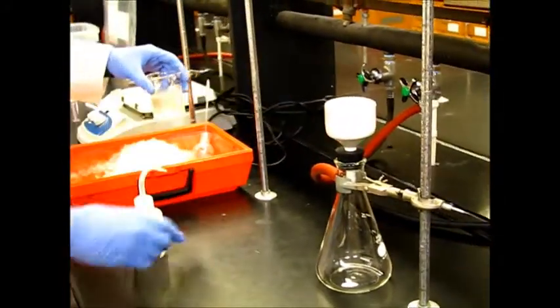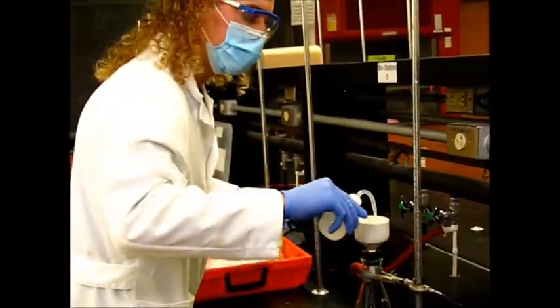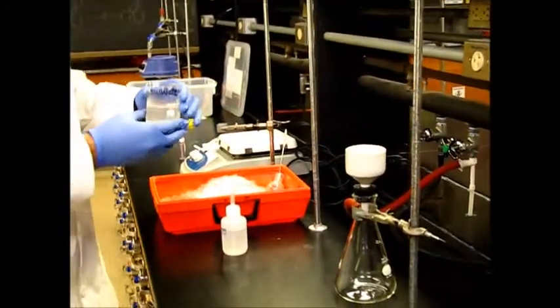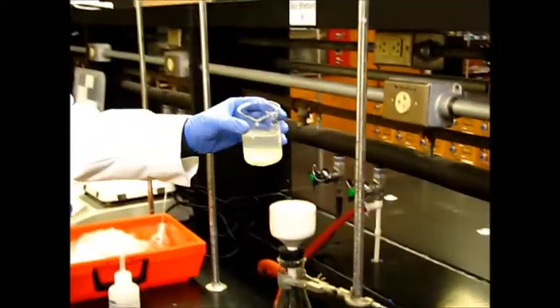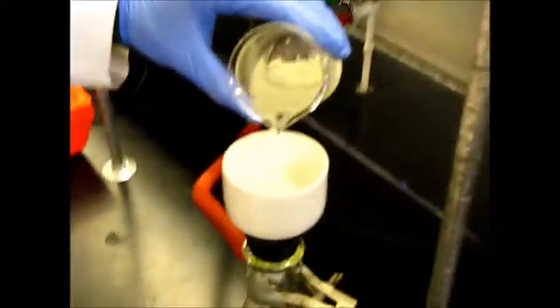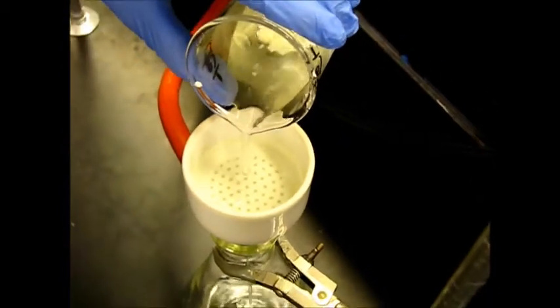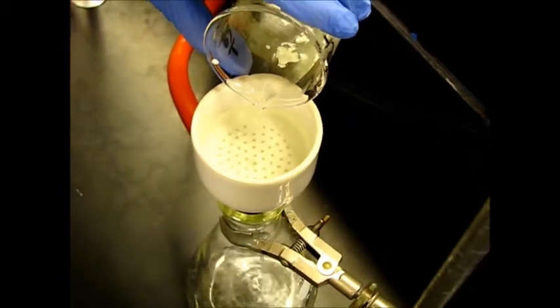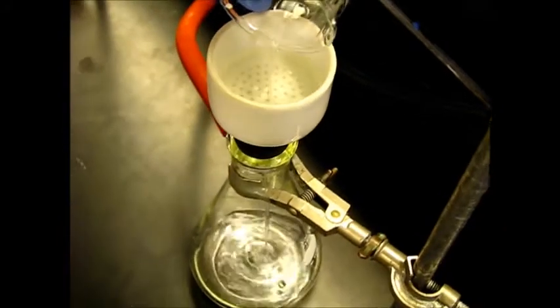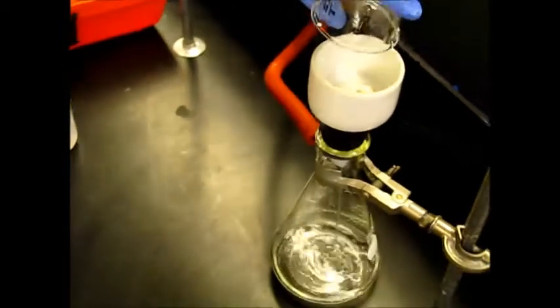Before you start your filtration, you want to make sure that your filter paper is wet so that you don't get any solid underneath it. Then we're going to add this whole thing in here. We're separating the water from our solid, which is our product.